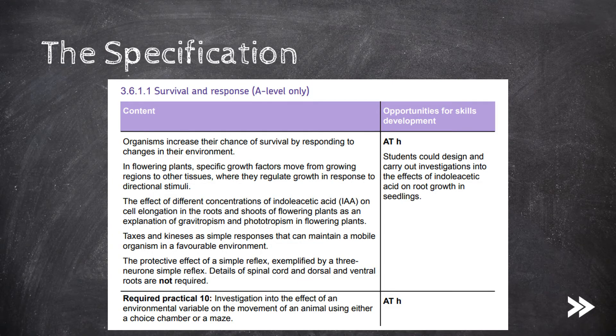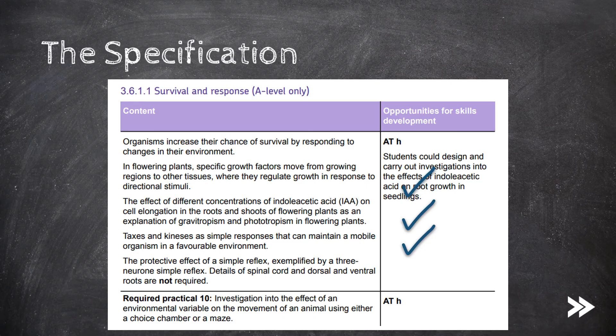Great, so we have covered how organisms increase their chance of survival by responding to changes in their environment. We have covered tropisms in plants, including the role of indoleacetic acid in facilitating gravi and phototropism. We've covered taxis and kinesis, and how they maintain mobile organisms in a favourable environment. And finally, we have covered the protective effect of a simple reflex, from receptors to sensory, relay and motor neurons, all the way to effectors. And how they are fast, localised and short-lived, and how this is so important in helping with survival.